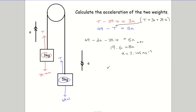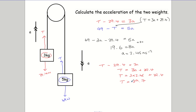To find tension, substitute a = 2.45 back into the red equation: T = 3a + 29.4 = 3 × 2.45 + 29.4 = 36.75 newtons. This is logical because T needs to be bigger than 29.4 to make the 3 kg block go up, but smaller than 49 because the 5 kg block is accelerating down. T = 36.75 falls between 29.4 and 49, so the answer is definitely correct.